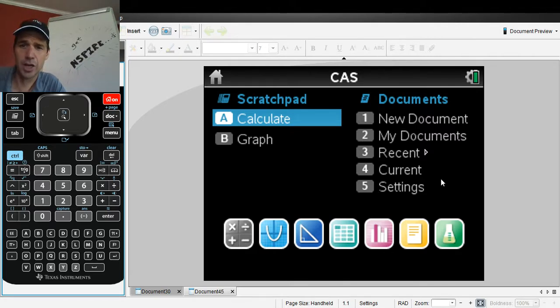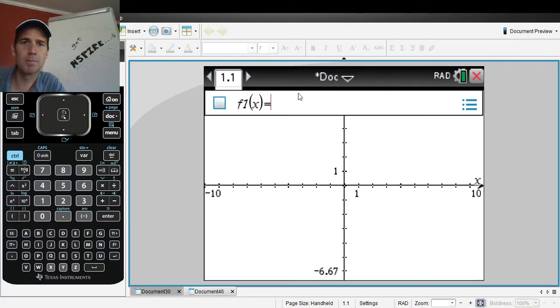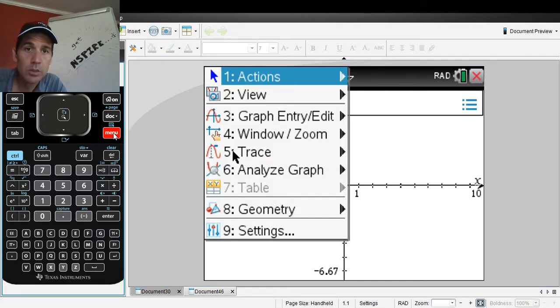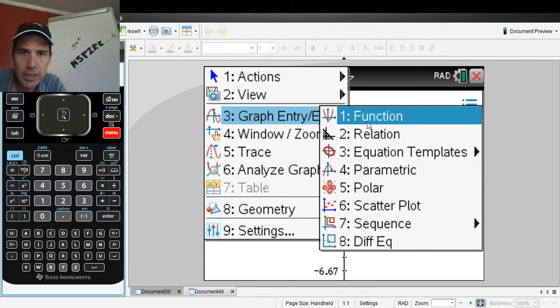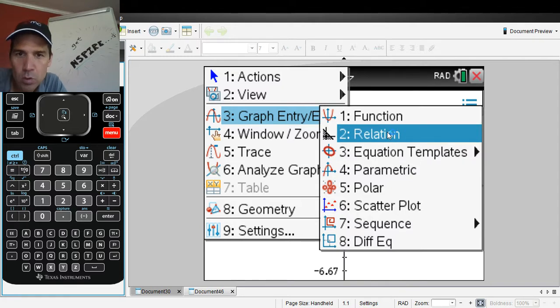Let's get inspired. Let's open up a new document and a graph. We're doing a little bit of parametric graphing. The default is always function mode, so you always got to go to menu and number three - graph entry. This is where you get to choose what kind of graph you want to work with.